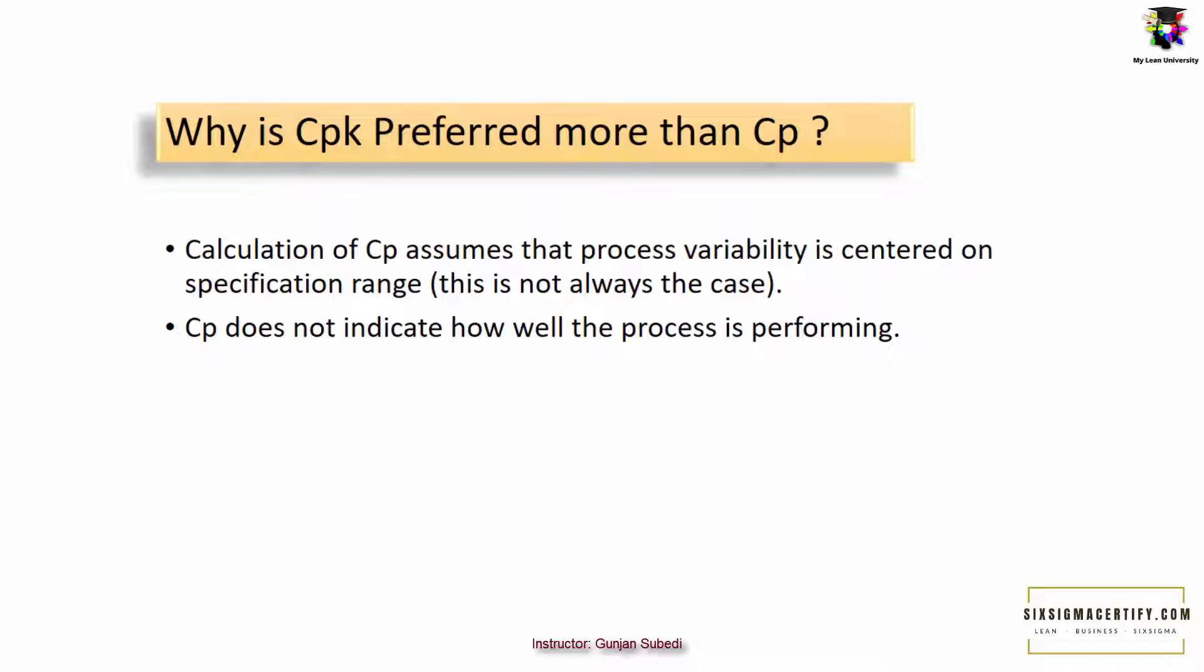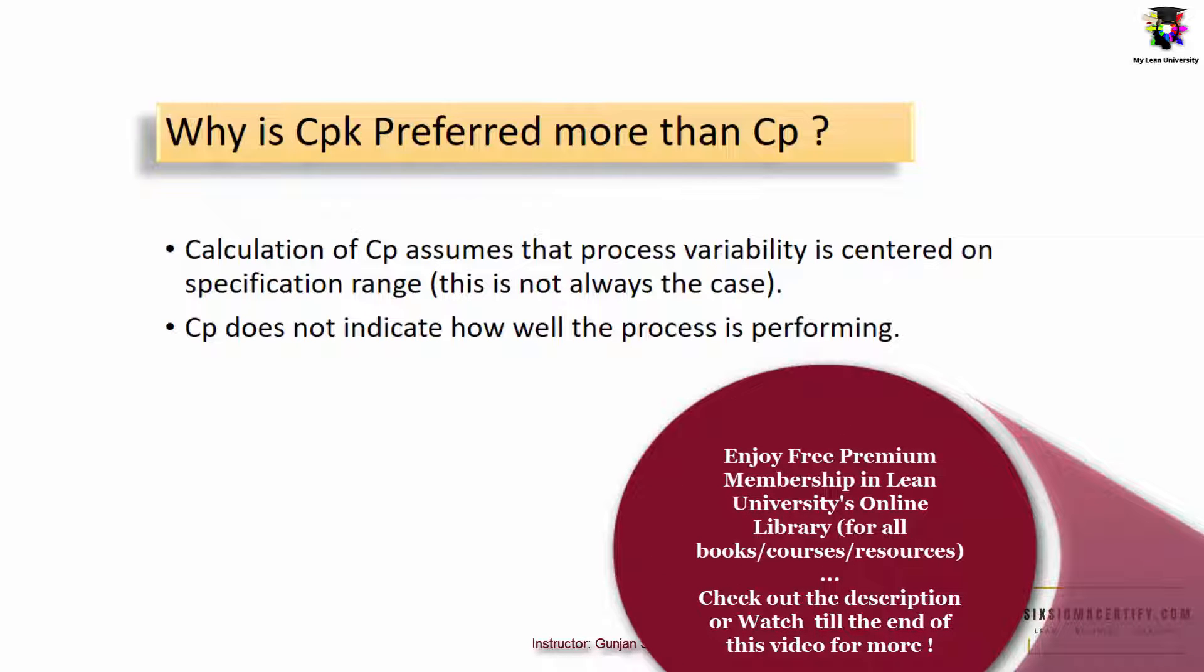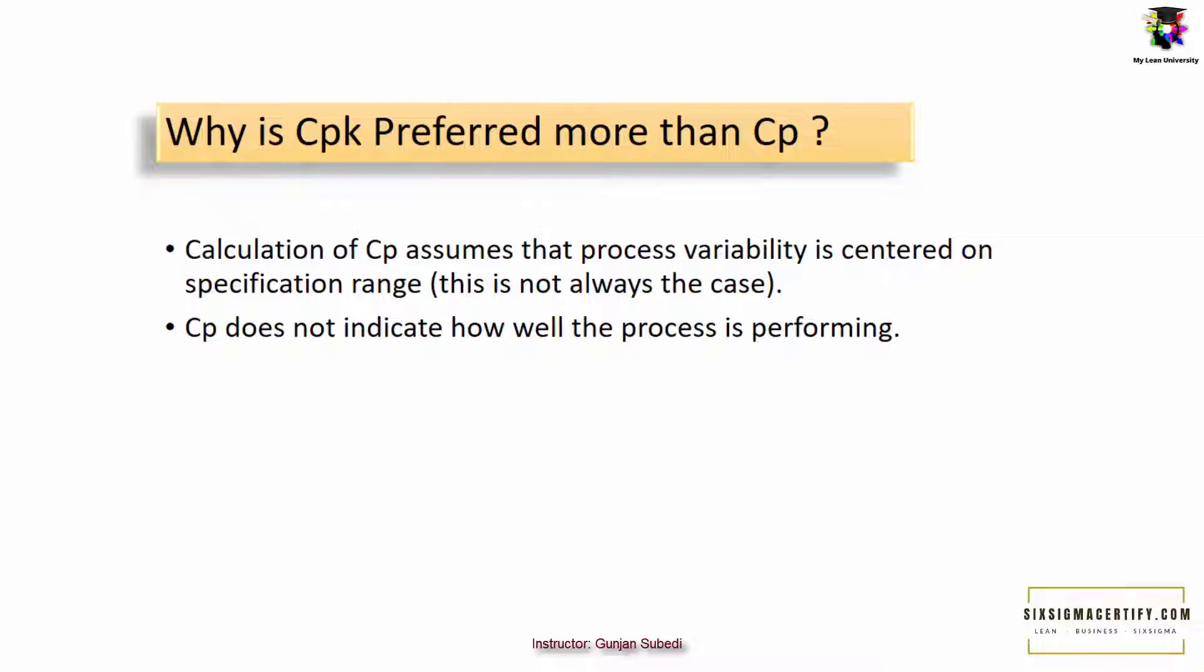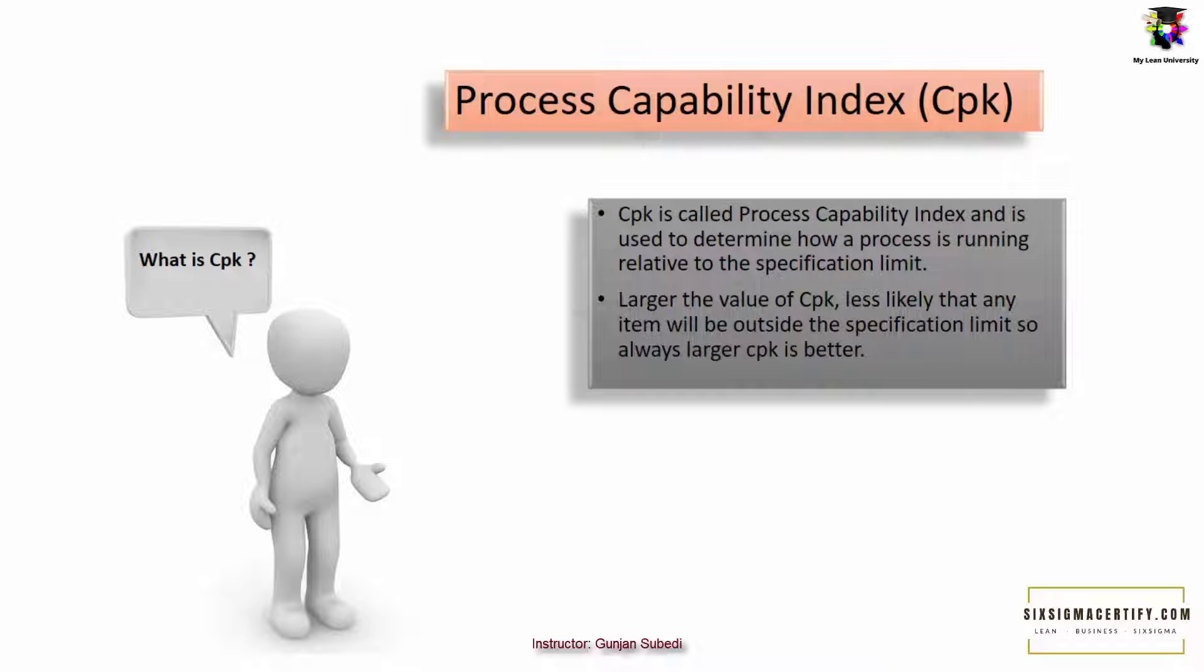And process capability index is preferred more than Cp. So why is CpK preferred more than Cp? There are two reasons. Calculations of Cp assume that process variability is centered on the specification range. Unfortunately, it is not always the case. And Cp does not always indicate how well the process is performing. It rather suggests how good the process could be. Let's then study about the term CpK, which we call better than Cp at explaining the process.